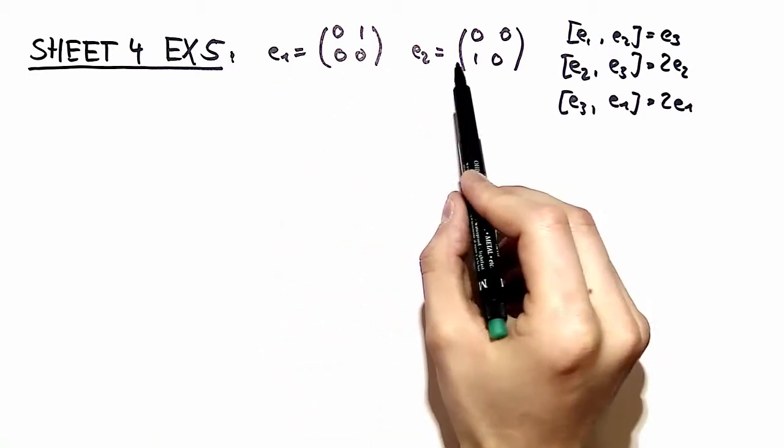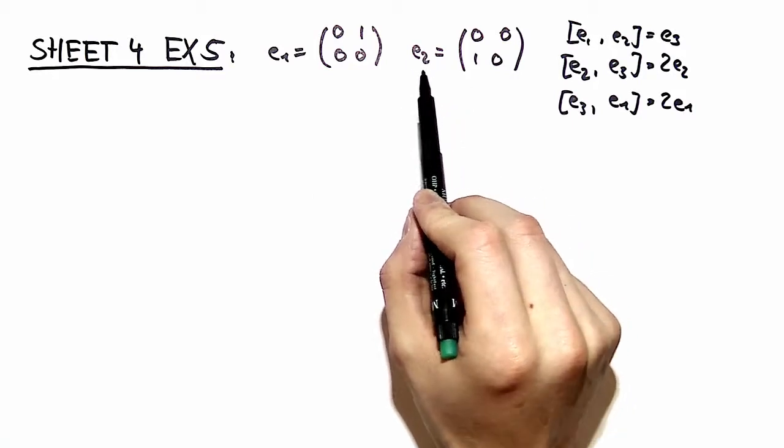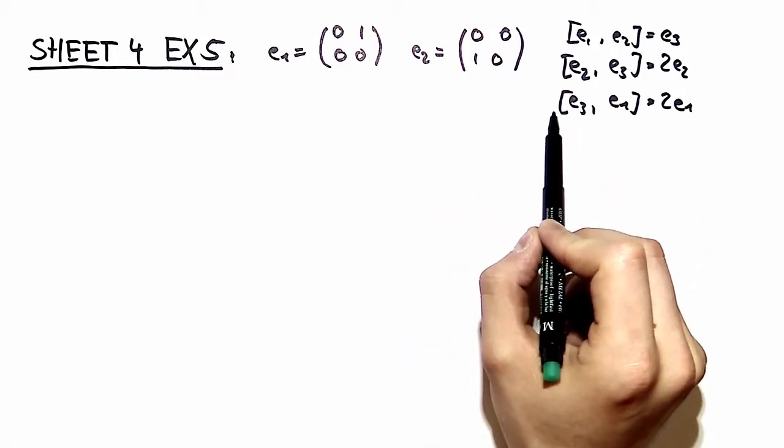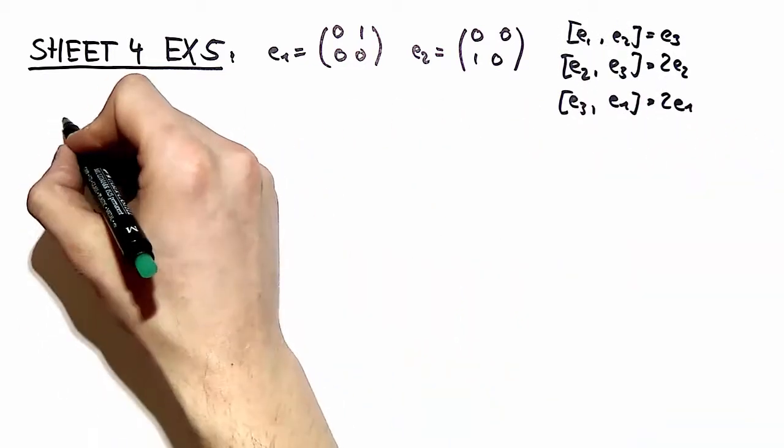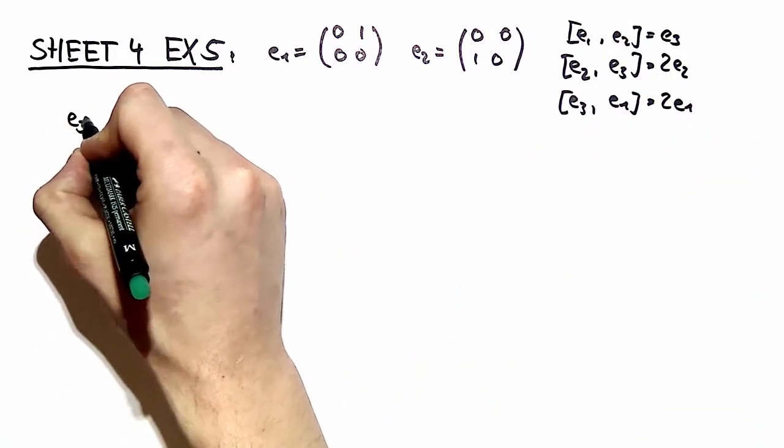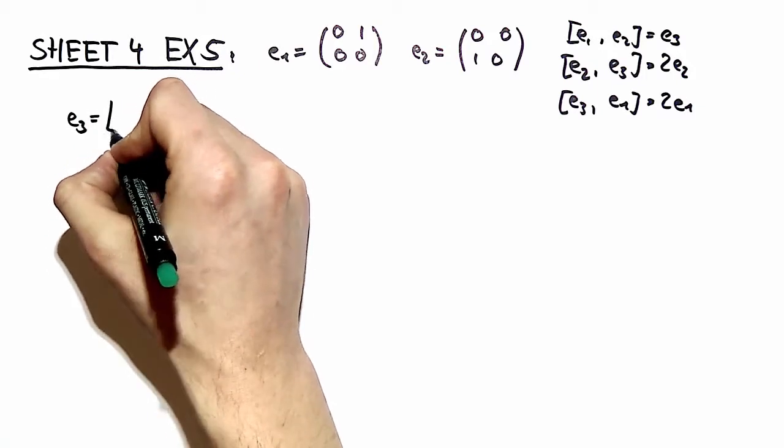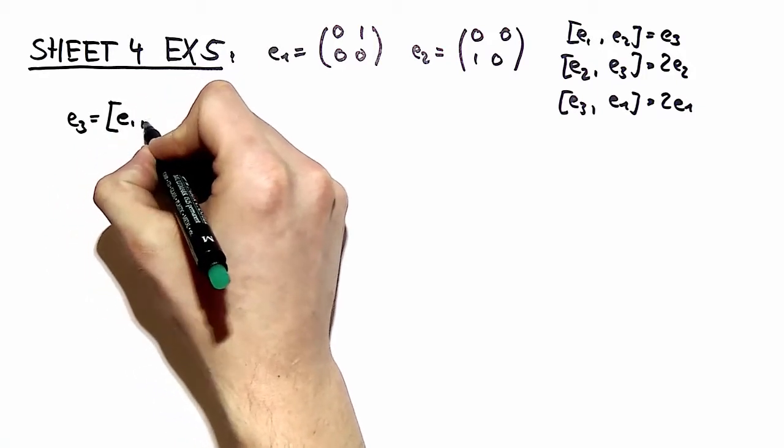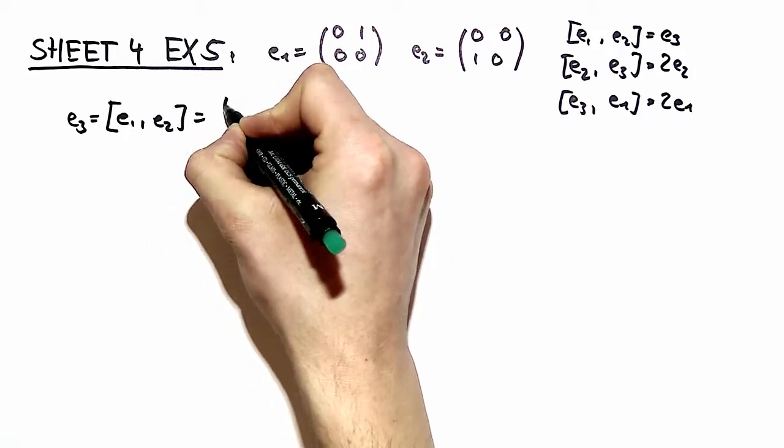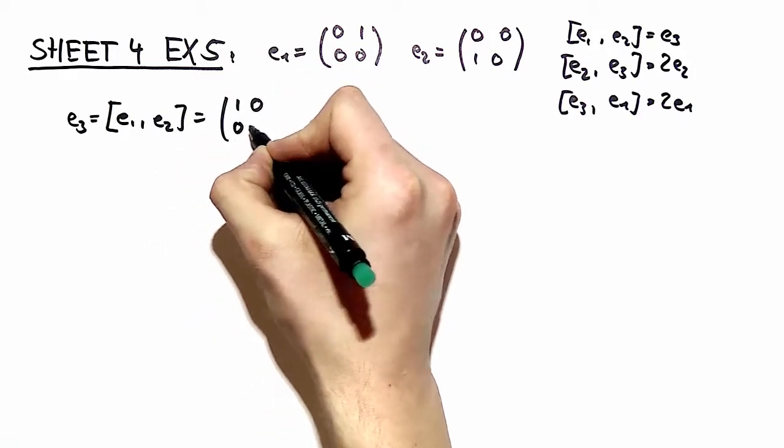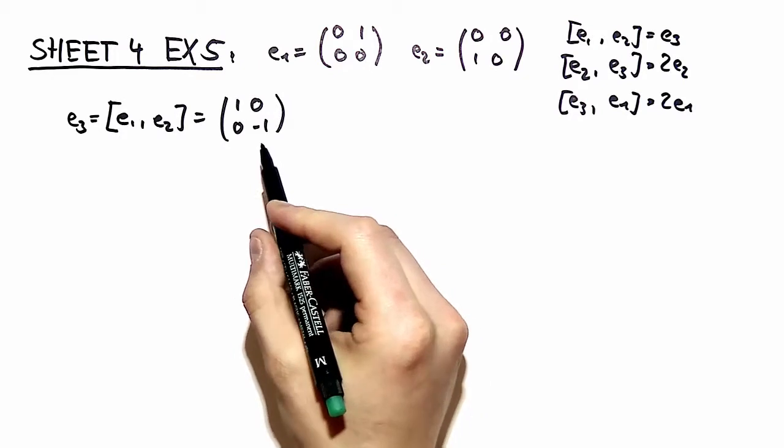The Lie group is given by two different basis vectors and the structure constants. With this commutation relation we are able to calculate the third basis vector E3 with a very straightforward calculation. We just multiply in some matrices so we arrive at this third basis vector.